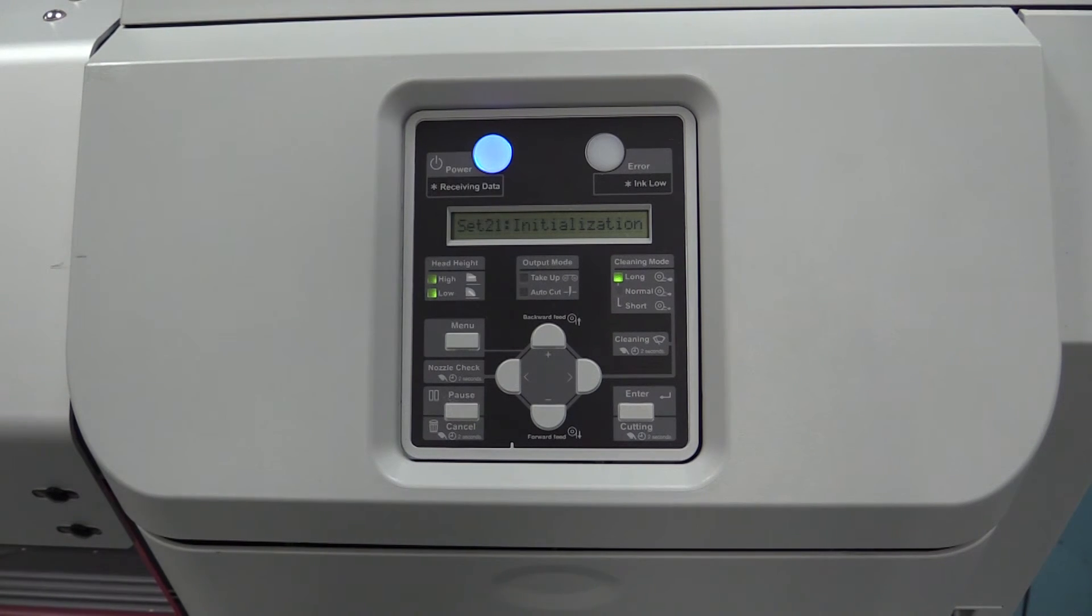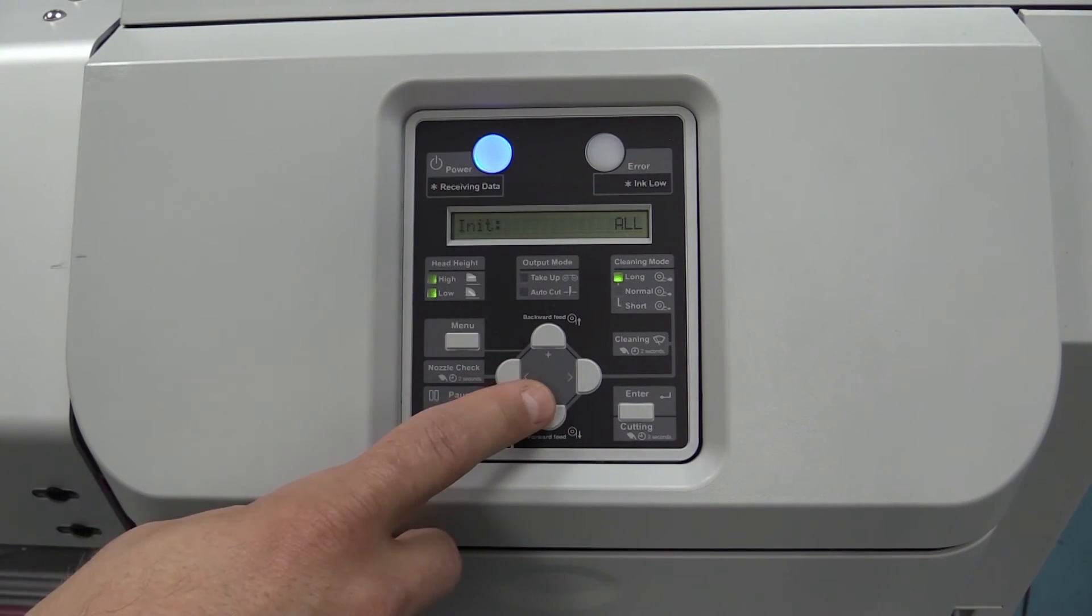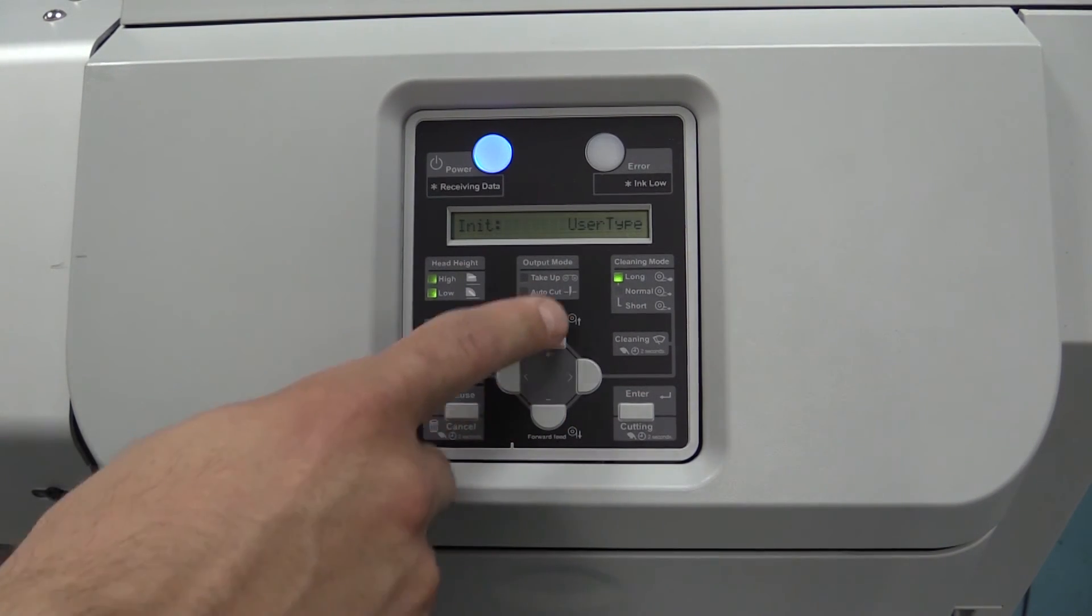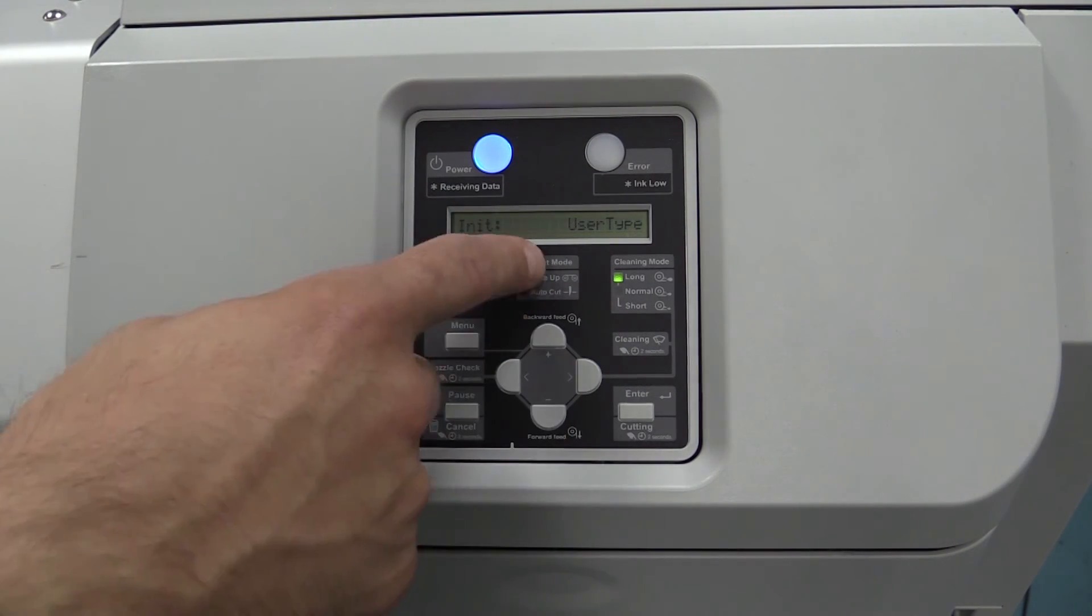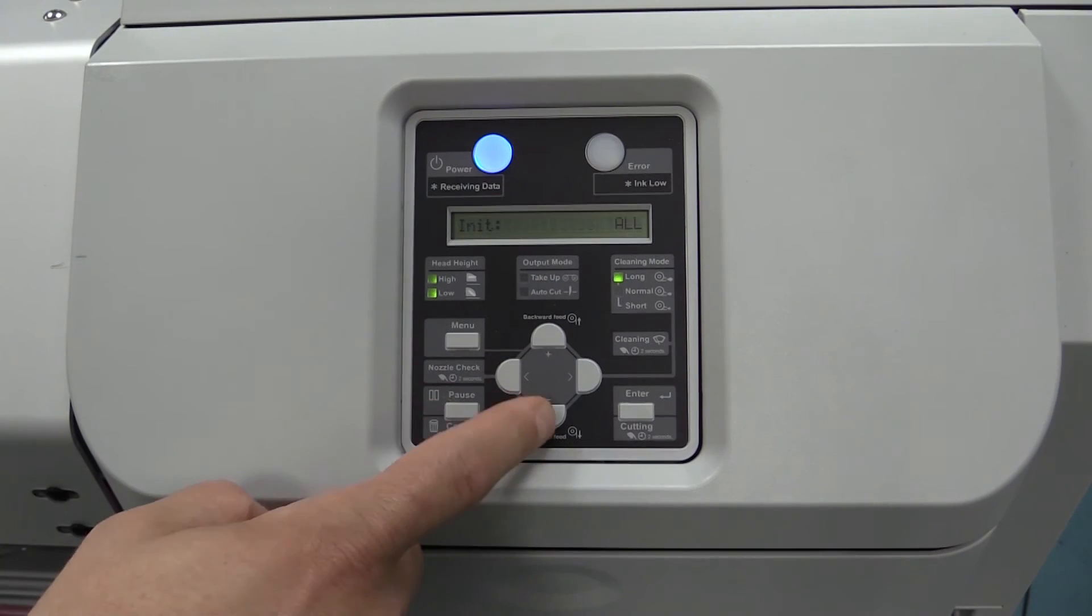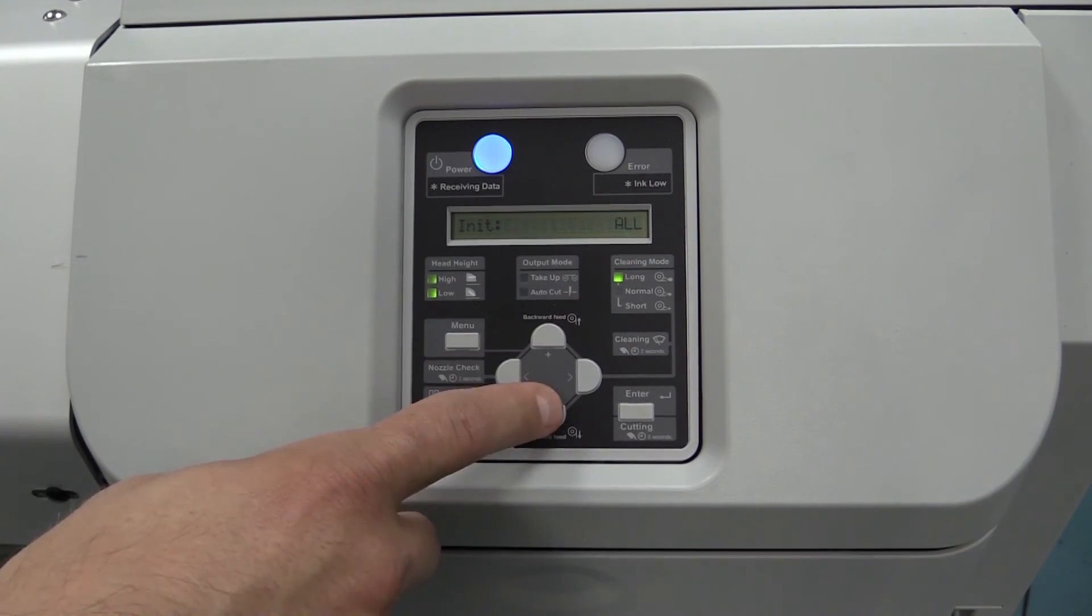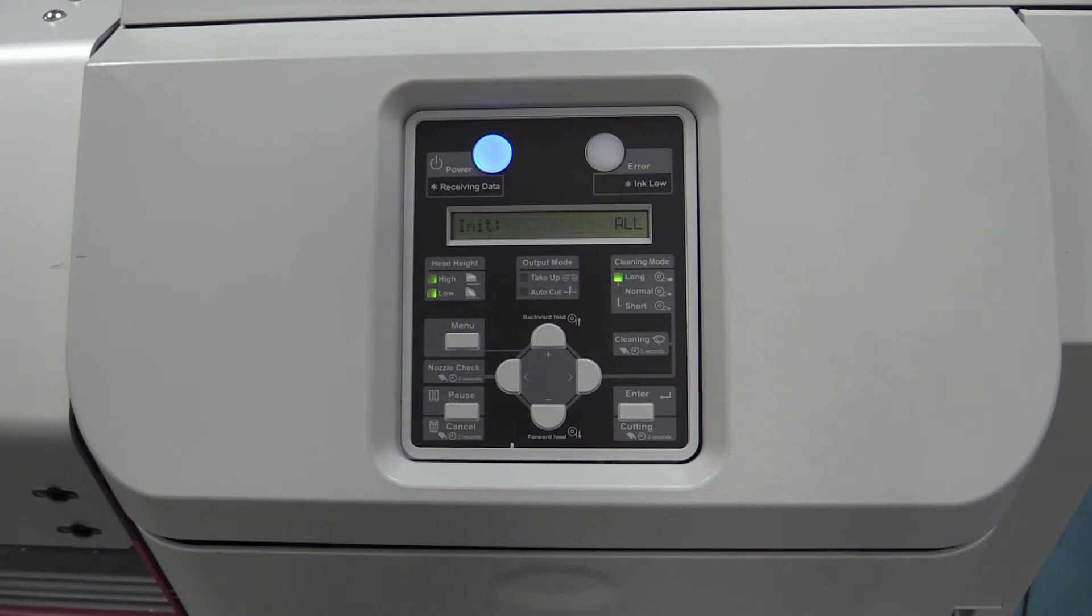Setting 21 is where you tell it what to do when the printer turns on. Right now it's set to all. You can have it ask what media you have in, your user type. We have it set to all so it will give you every choice, every media that you have loaded on the system, and let you select from when you load the system.